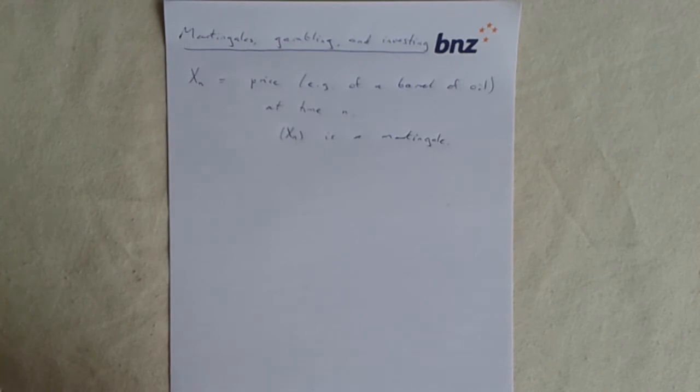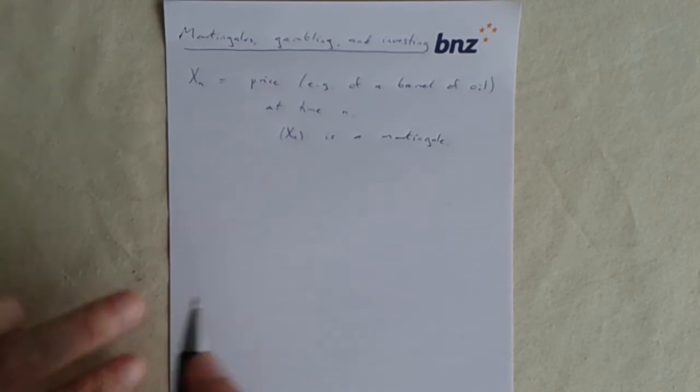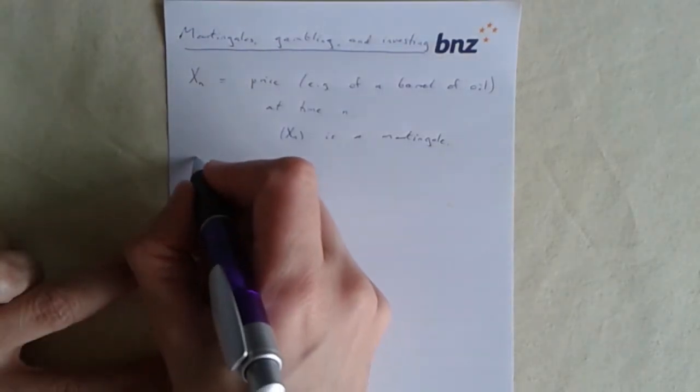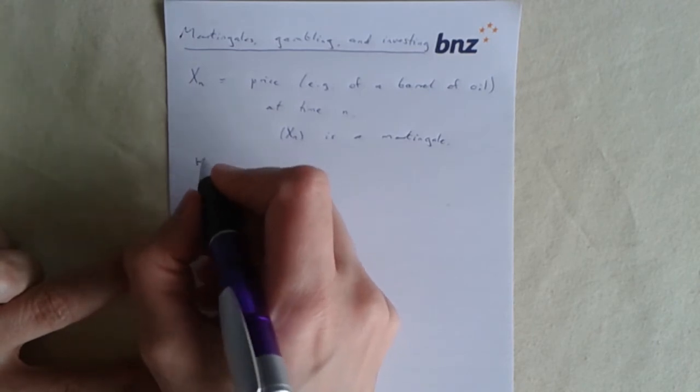So in discrete time, let's say that xn is the price of something at time n, the price, for example, of a barrel of oil, so some commodity whose price is fluctuating randomly all the time.